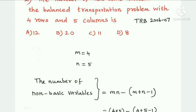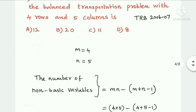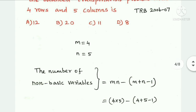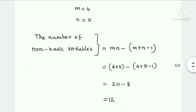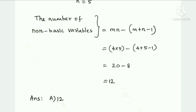The formula is: m×n minus (m+n-1). Here m=4 and n=5. So: 4×5 minus (4+5-1) = 20 minus 8 = 12. Option A, the answer is 12.